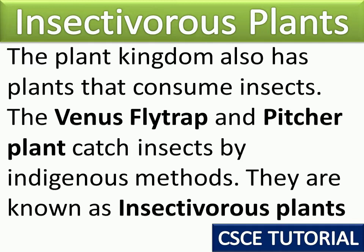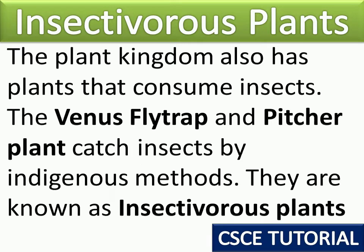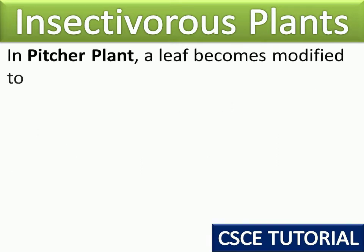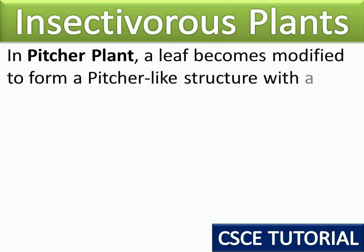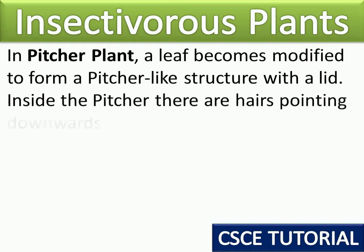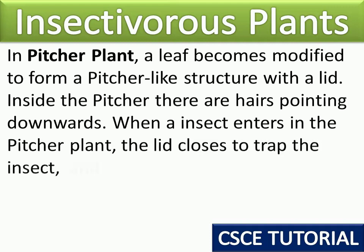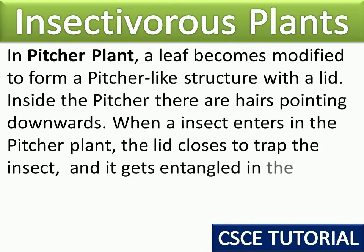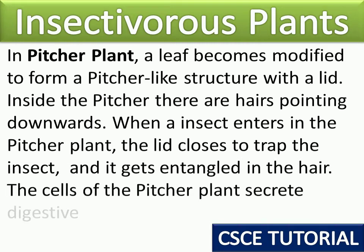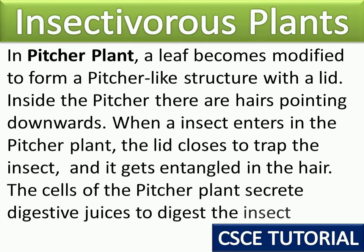Insectivorous plants: in a pitcher plant, a leaf becomes modified to form a pitcher-like structure with a lid. Inside the pitcher, there are hairs pointing downwards. When an insect enters the pitcher plant, the lid closes to trap the insect and it gets entangled in the hairs. The cells of the pitcher plant then secrete digestive juices to digest the insect.